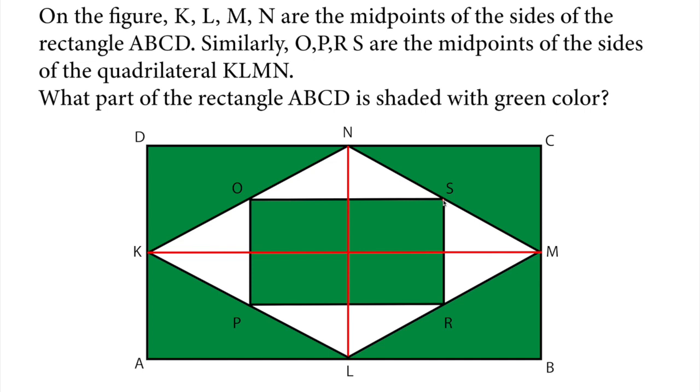This diagonal is the key here because it will divide this rectangle into half. Diagonals divide rectangles into half. Now I can see that this green rectangle right here, I will put a dot here, and this one are identical. So if I call this A, this green will be A.